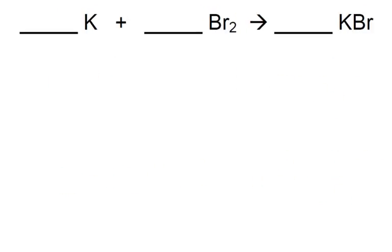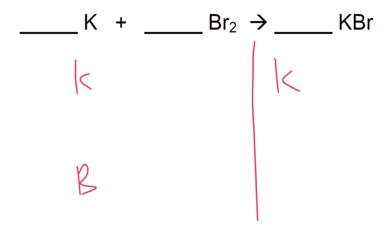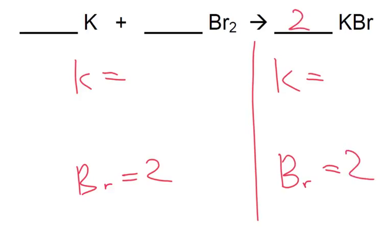Next up, potassium and bromine goes to potassium bromide. On this side we've got two bromines, so let's put a two here, then we can have two here. That means we've got two potassiums here, so if we put a two here we've got two there. So it's going to be 2, 1, 2: two potassiums plus one bromine molecule goes to two potassium bromides.